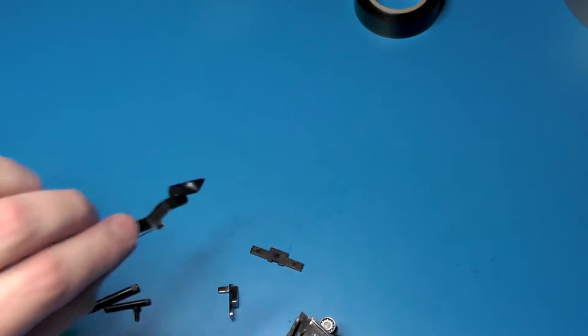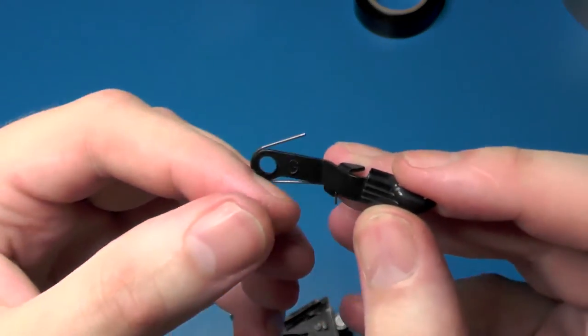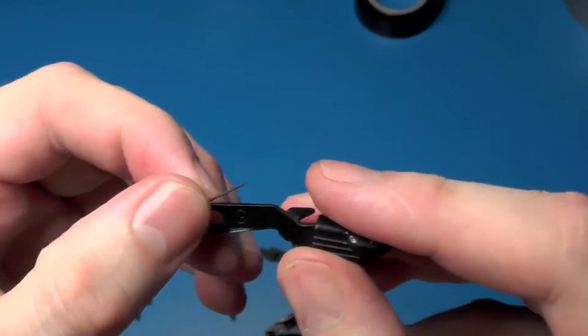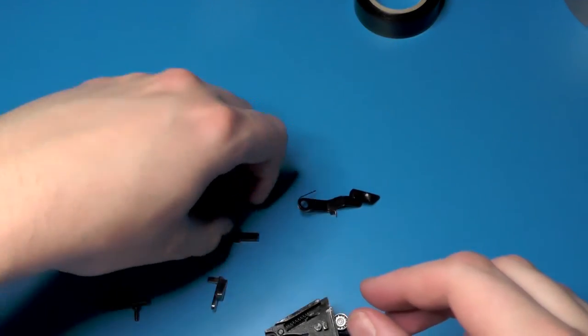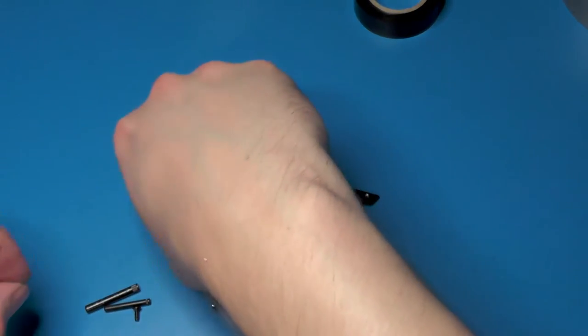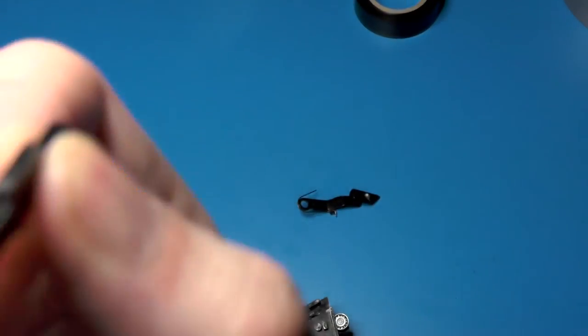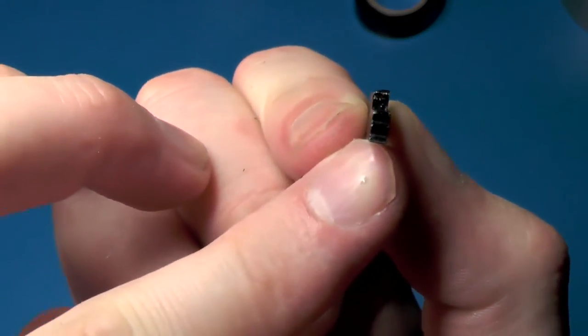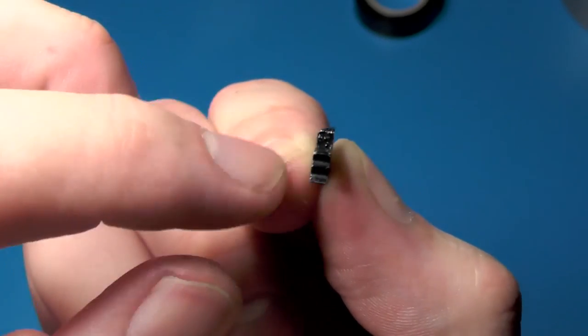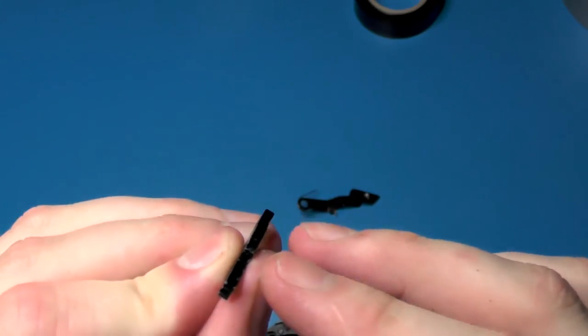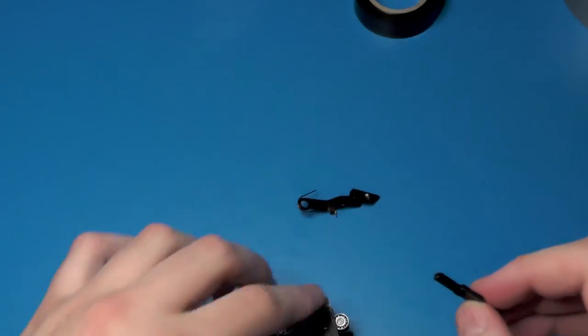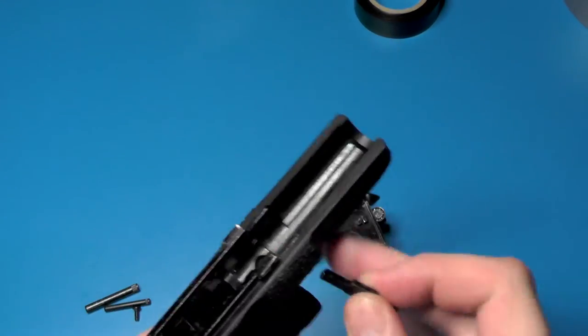Next up we are going to be putting in the slide catch and slide release. No we are not, I'm sorry. We are going to put in the slide lock lever at this point. And this goes in in a specific direction. You can see that it's slightly slanted here at the front, so that piece, the slanted edge, goes towards the front of the gun.